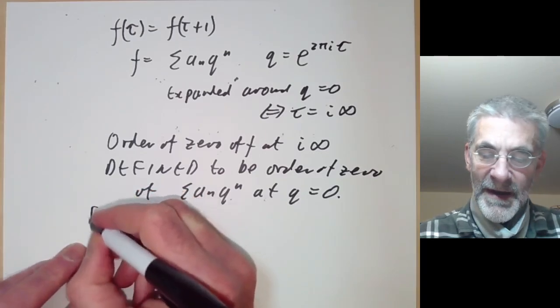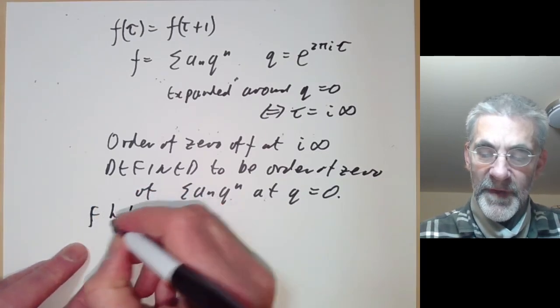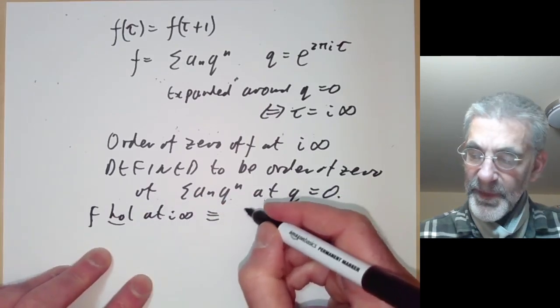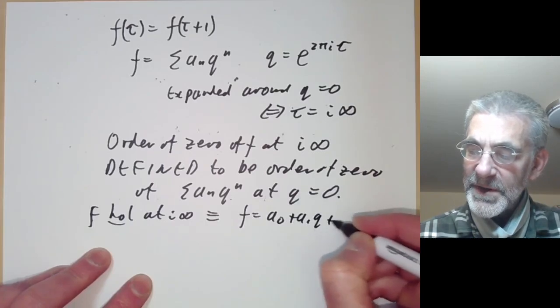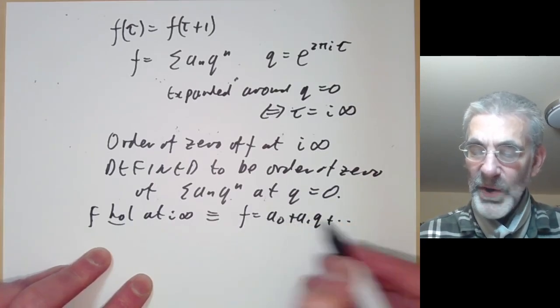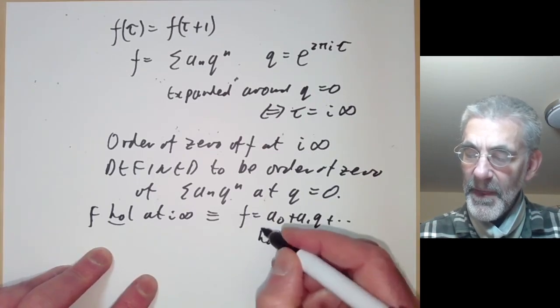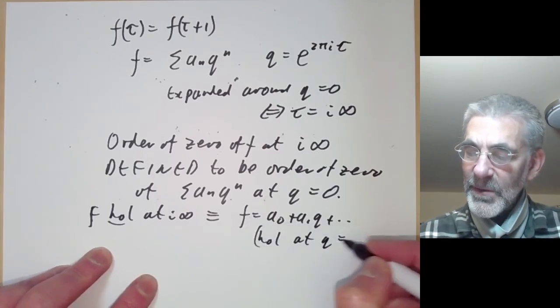Similarly we say that f is holomorphic at i infinity means that f is equal to a_0 plus a_1 q and so on, so there have to be no negative powers of q. So that's the same as saying f is holomorphic at q equals zero.